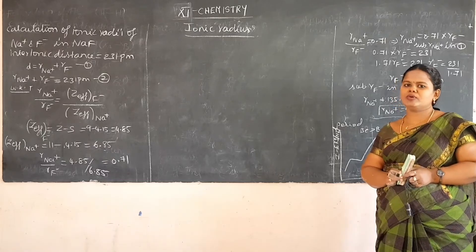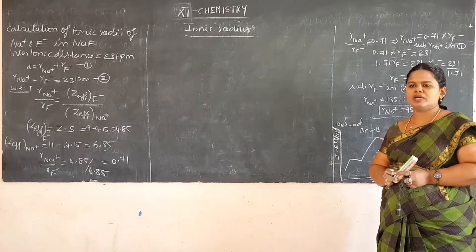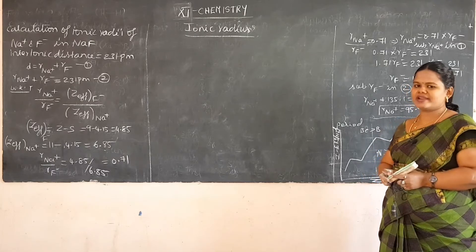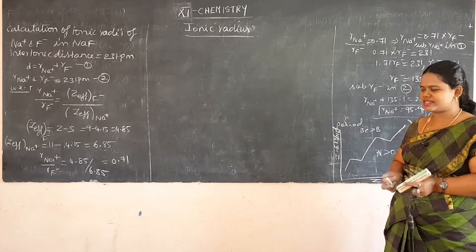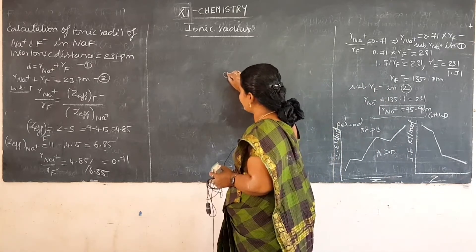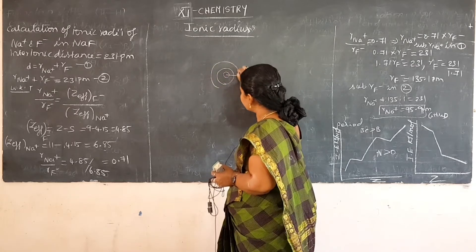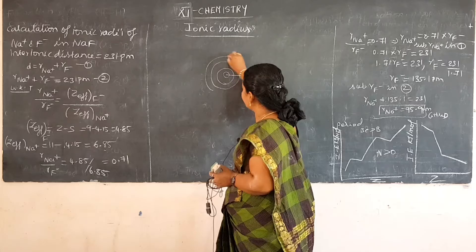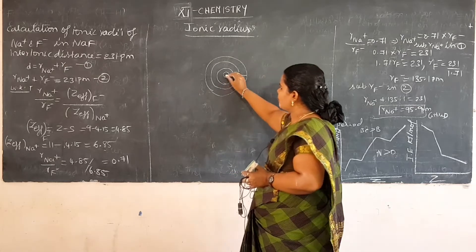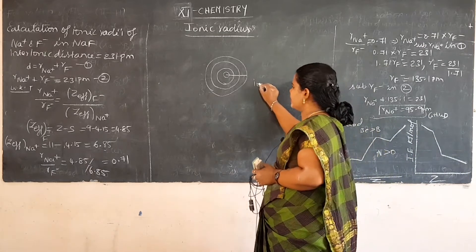Good morning everyone. Today we'll learn about a new concept: ionic radius. We have already learned many important concepts in p-block elements, and now we'll learn this important concept. Ionic radius is nothing but the distance between the center of the nucleus of an ion up to which it has influence on its electron cloud.